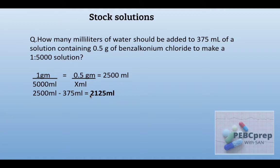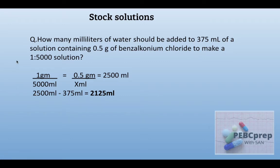We add 2125 ml of water to the 375 ml, making our final volume 2500 ml. According to the question, that gives us a concentration of 1:5000 ratio strength.